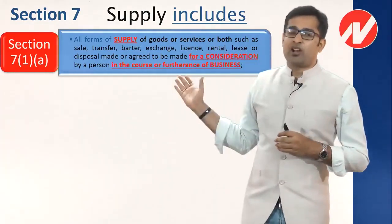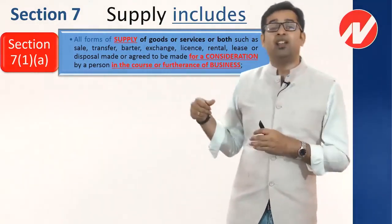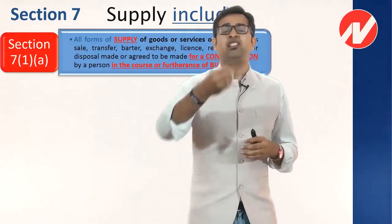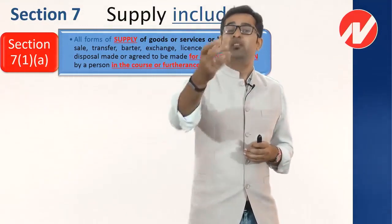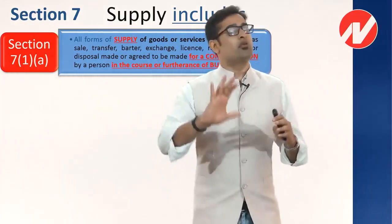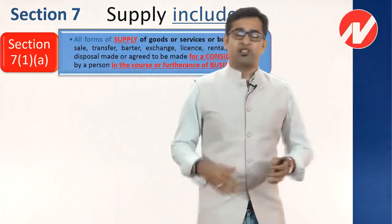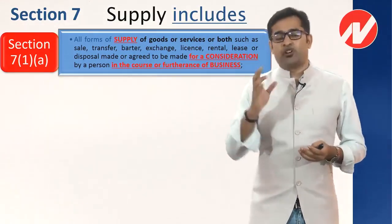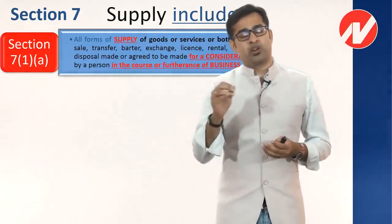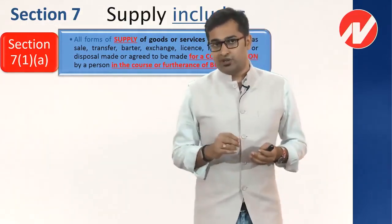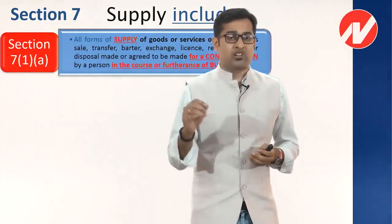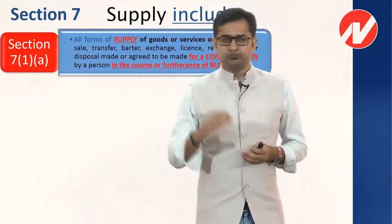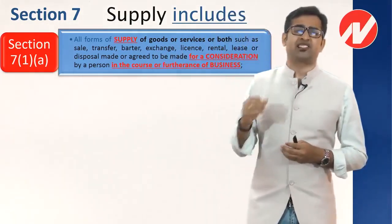Lease and rental are also examples of transfer — when we give a machine on lease, we give possession to that party but ownership still remains with us. So the most important difference between sale and transfer is ownership versus possession. Sale requires a change in ownership; transfer only requires giving possession.